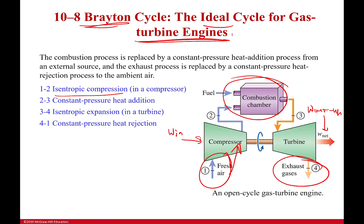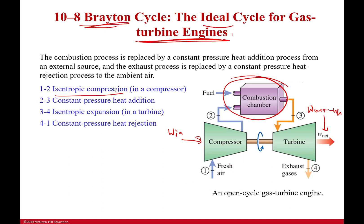Why can it be constant pressure heat rejection? Because the pressure there is just ambient — it doesn't change, so it's able to go out as it pleases. So this is the Brayton cycle. If you look at this, we have constant pressure, constant pressure, isentropic, isentropic. We've dealt with all these before, so the overall process is pretty similar to what we've seen in the past.